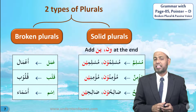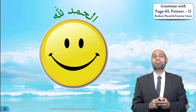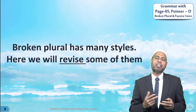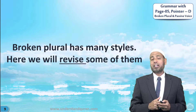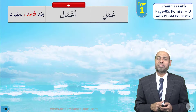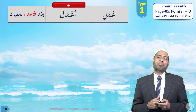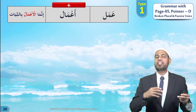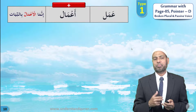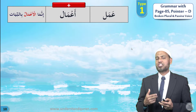Can you teach these two types of plurals to your friend Alim? Alhamdulillah, broken plural has many styles. Here we will revise some of them from the lessons studied in this course over five pages. Let us take the plural of 'amal — the first type. 'Amal means actions, deeds, works, and its plural is a'mal. The example is: innamal a'malu bin-niyyat.